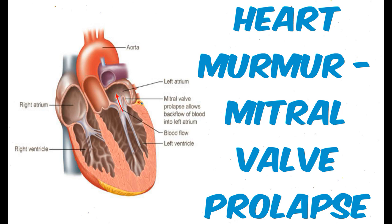Although this disease was only described in the 1960s, it is the most common valvular disease in the United States. Currently, the incidence of mitral valve prolapse is estimated to be 2.4% of the population based on data from the Framingham study. Earlier estimates of 17% incidence were due to selection bias and less specific two-dimensional echocardiographic criteria.